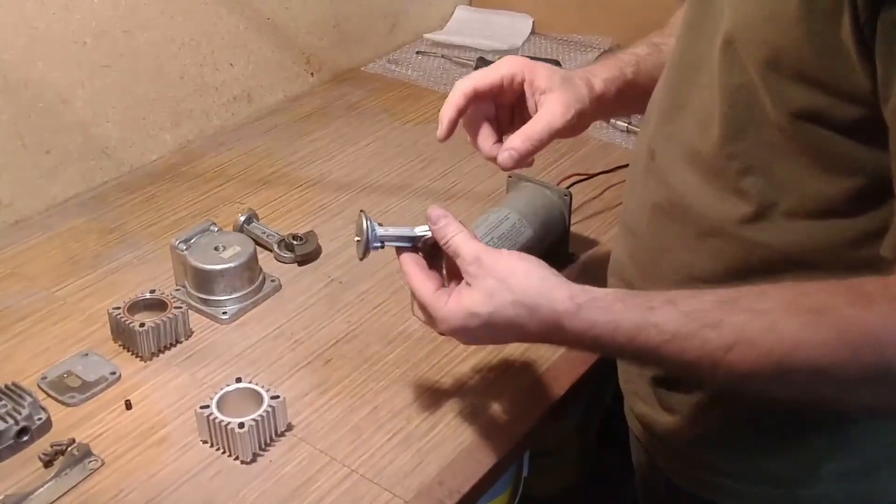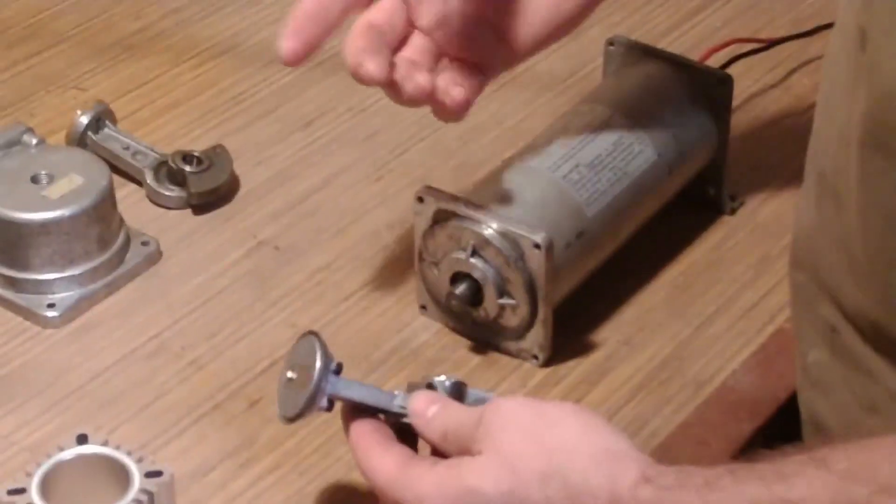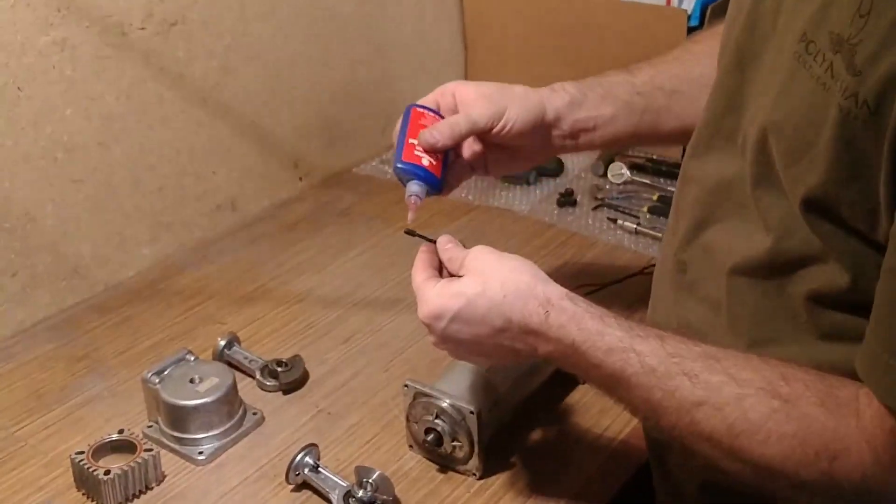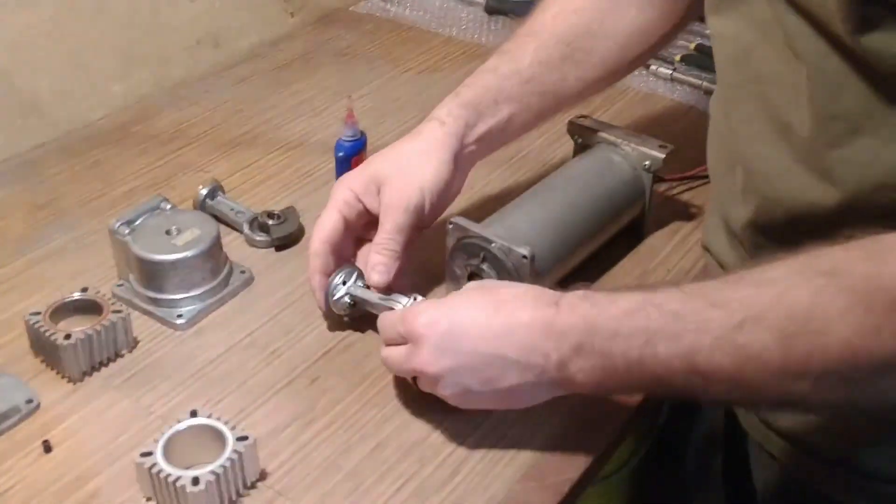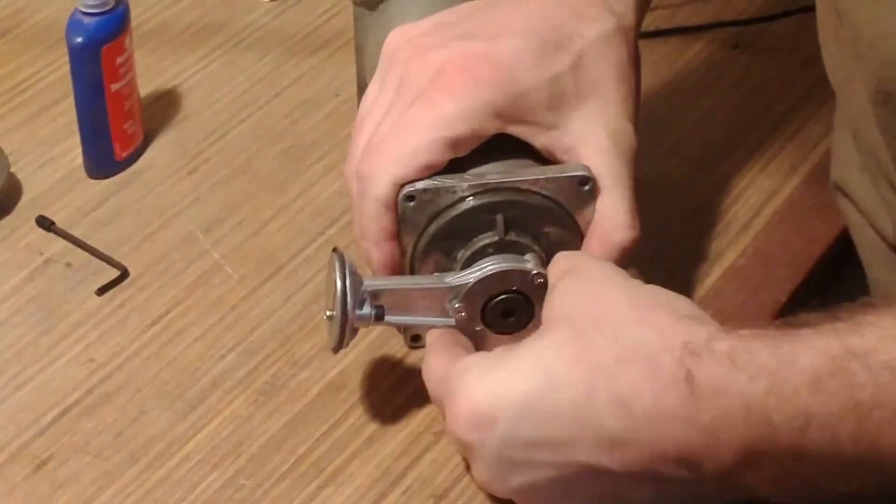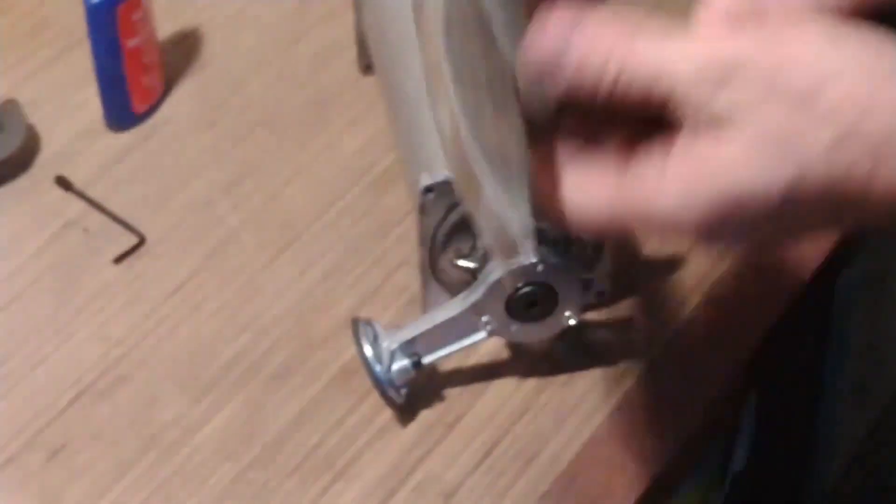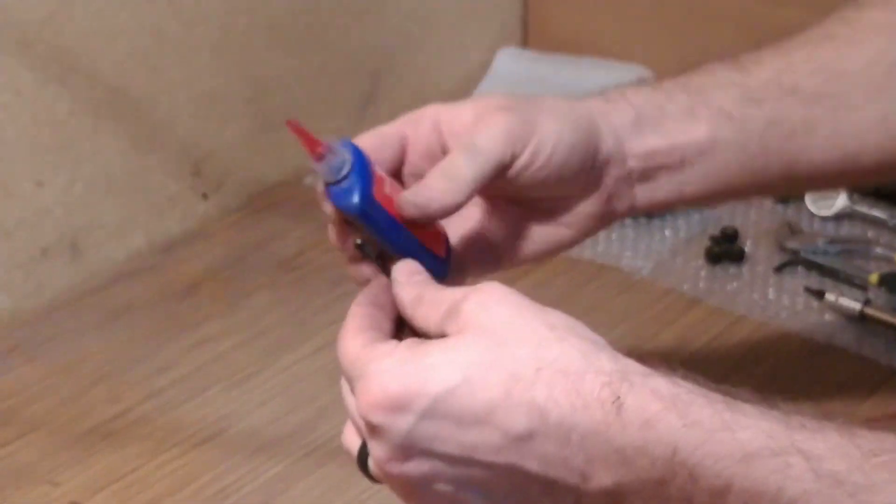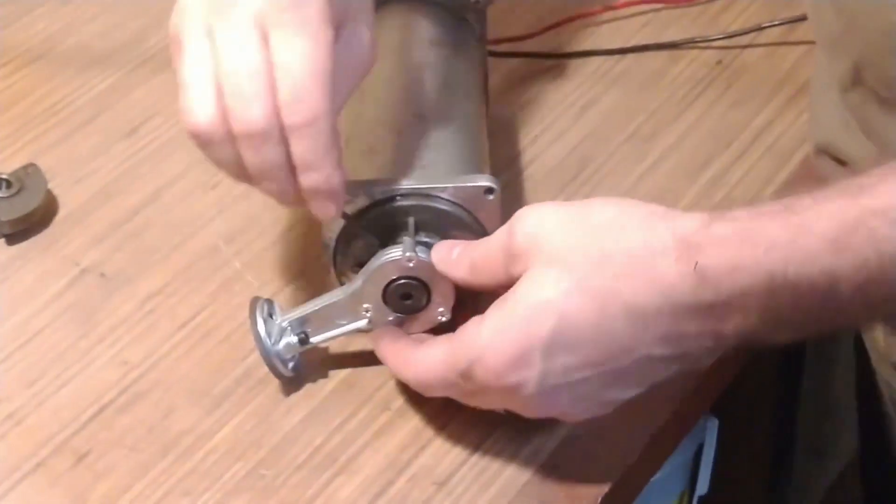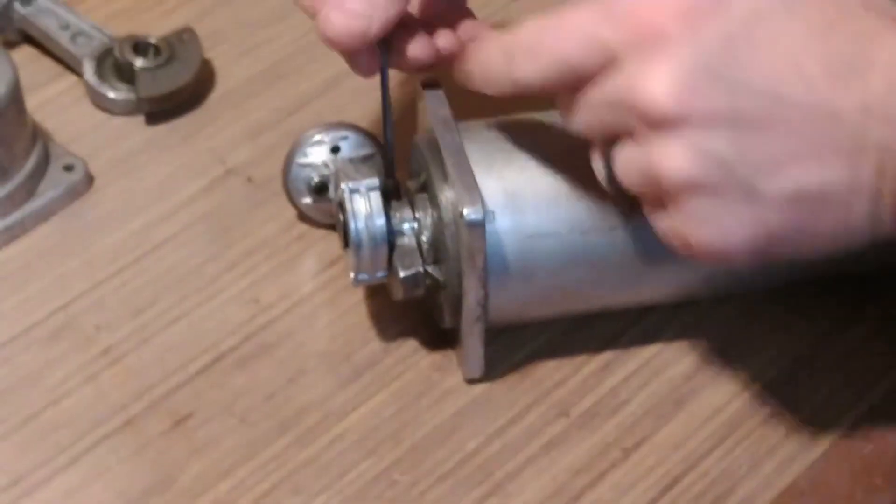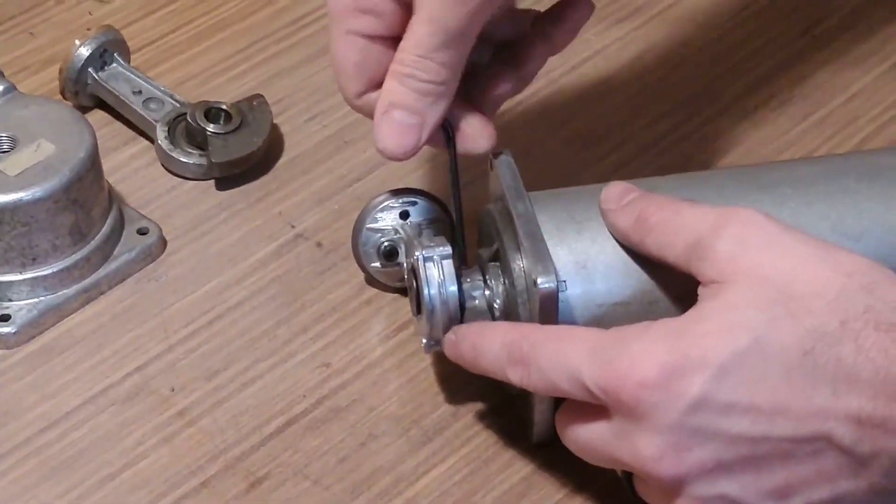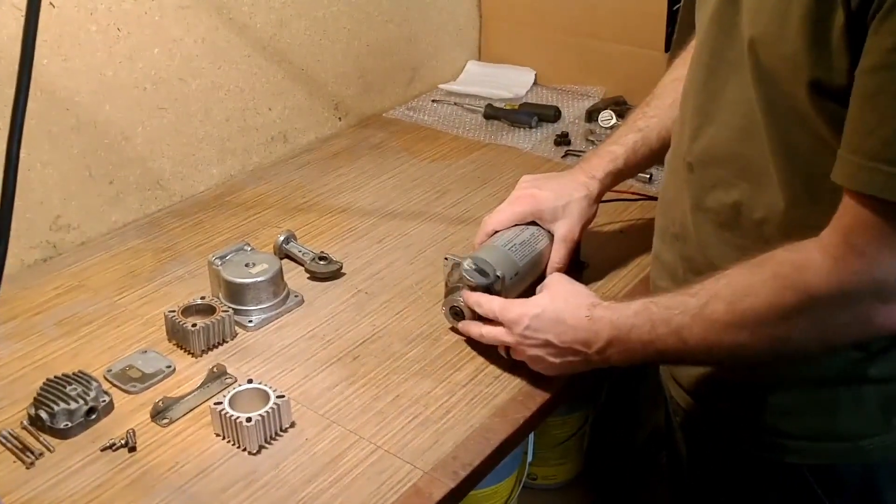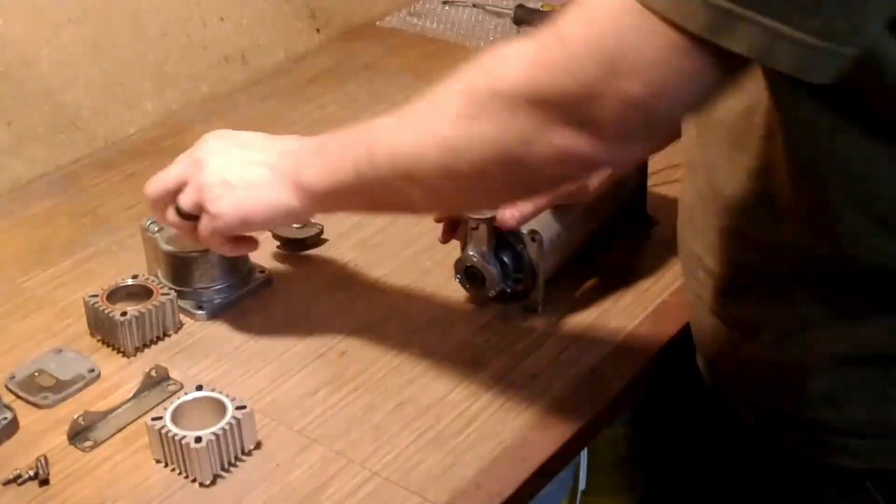So what we'll end up doing is putting some Loctite on this one, putting it in that flat, and then just reassemble. Now we're going to get that set screw right in there. All right, now we've got our piston back on the end. Set screw is in. Loctite is in.